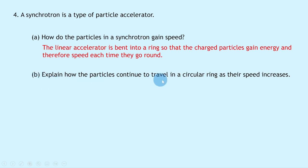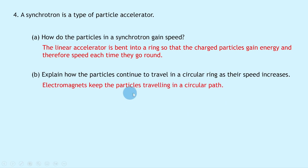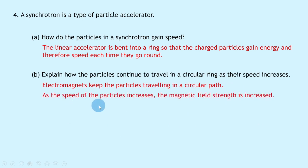Part (b) asks to explain how the particles continue to travel in a circular ring as their speed increases. Electromagnets keep the particles traveling in a circular path. As the speed of the particles increases, the magnetic field strength is increased to maintain the circular path.